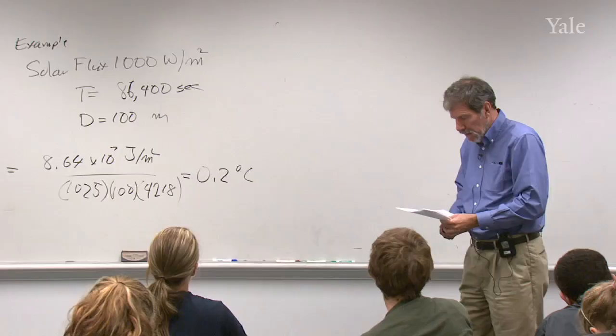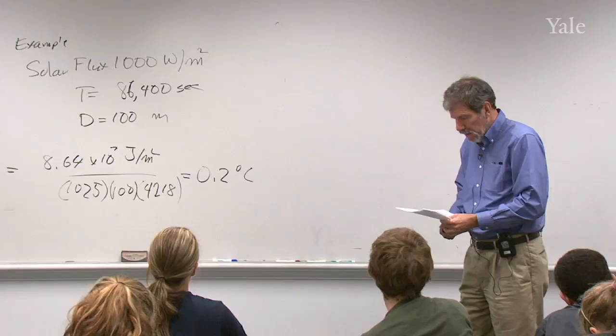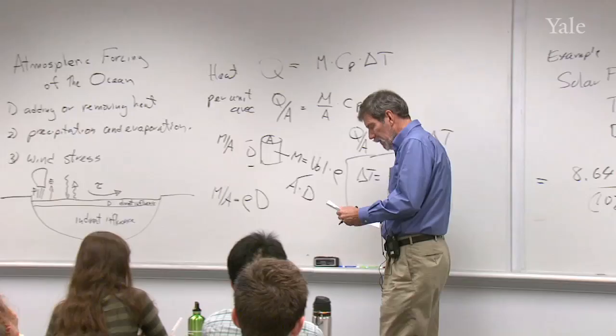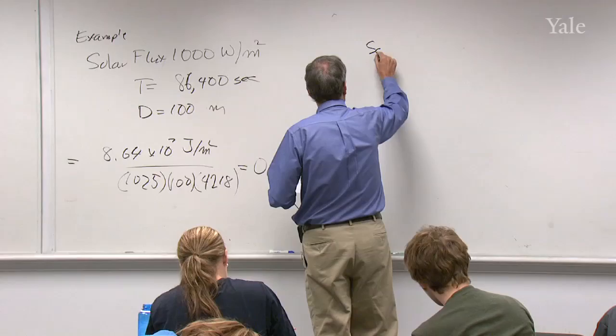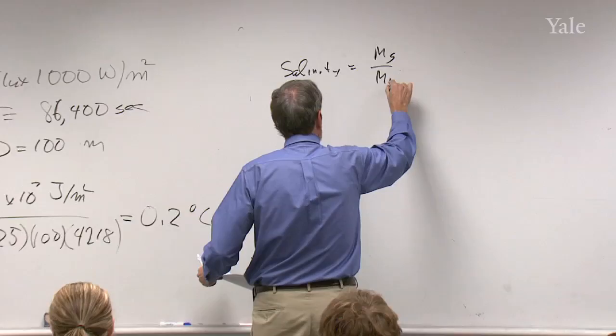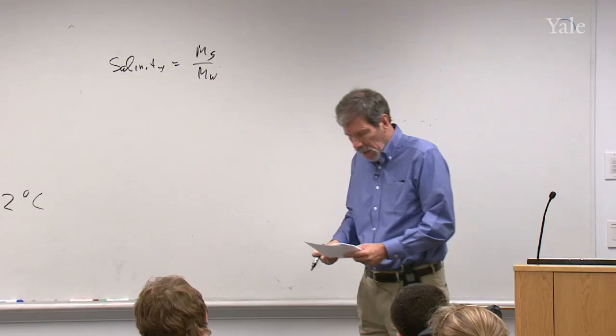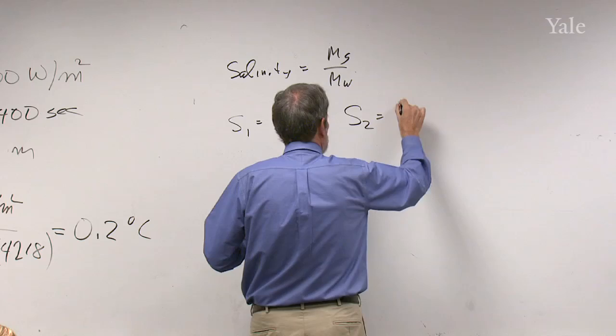Now the next one will be number two. This is a little trickier. Let me define the salinity as the mass of the salt over the mass of the water in any particular sample that you have. I'm going to be looking at change. So I'm going to define salinity at time one as being the mass of salt at time one over the mass of water at time one, and salinity at time two as being ms2 over mw2.